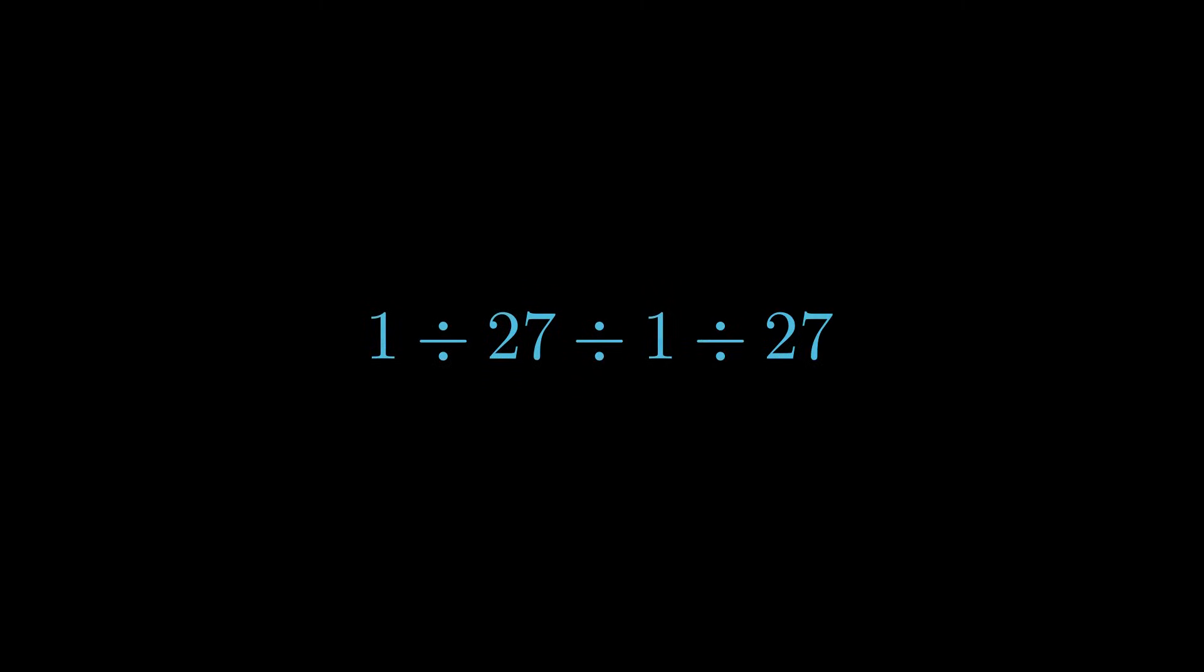Let's go back to our simplified expression and do this the right way. Starting from the left, we take the very first operation: 1 divided by 27. That gives us 1 over 27, and now our expression looks like this.